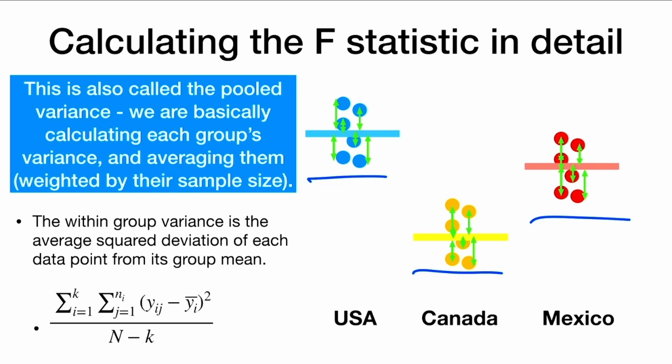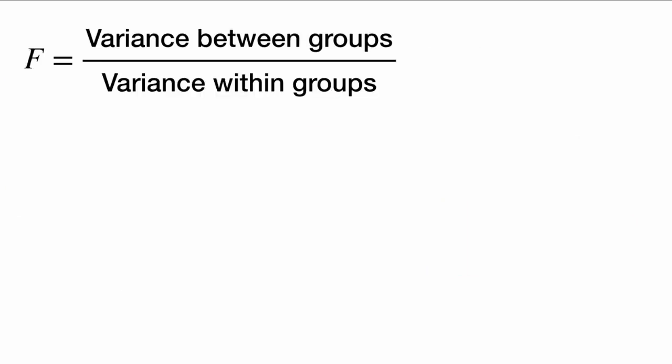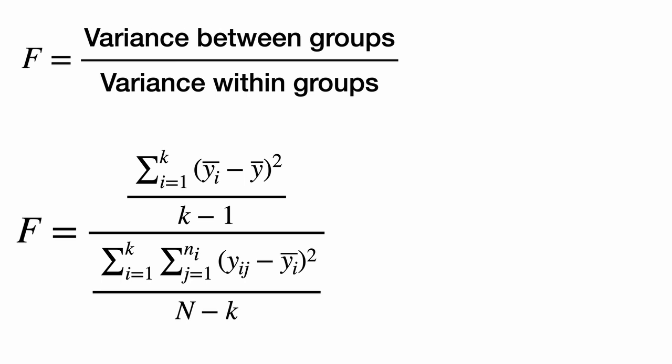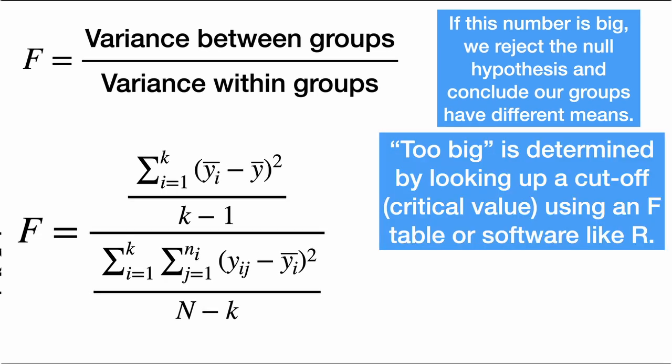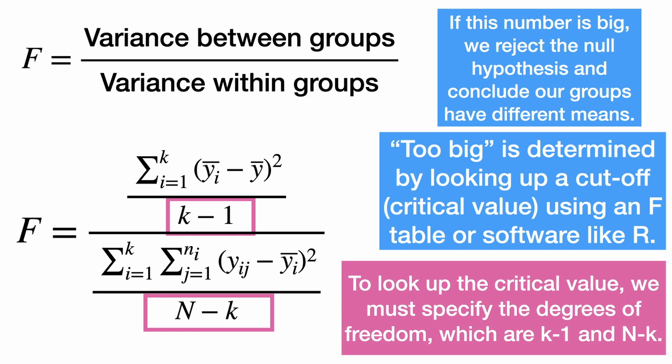This is basically the same as calculating each group's variance and averaging them, weighted by sample size if groups have different sample sizes. Our F-statistic is the variance between groups over the variance within groups, which can be expressed through this formula. If this number is big, we reject the null hypothesis and conclude our groups have different means. The cutoff critical value can be found using an F-table in a statistics textbook or software like R, and requires specifying the degrees of freedom: K minus 1 and N minus K.